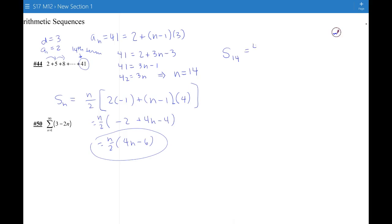So now I know the number that goes in the over 2 part is 14. Then I have 2 times my a sub 1 of 2. So this is the a sub 1. And then I have n is 14 minus 1 times d, which is 3.